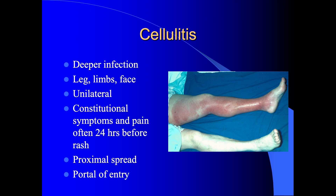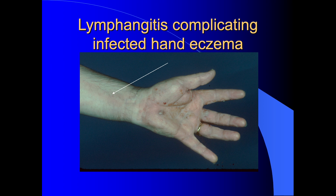Here you can see somebody who's got a vesicular eczema affecting her hands, sometimes called pompholyx. The hand eczema has become more tender, she's become febrile and unwell, and you can see a spreading redness extending from the wrist onto the forearm. This is called lymphangitis, and it's usually the result of a streptococcal infection of the eczema spreading proximally up through the lymphatics.